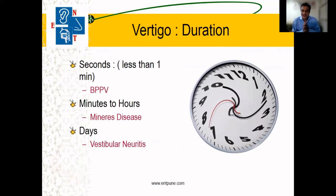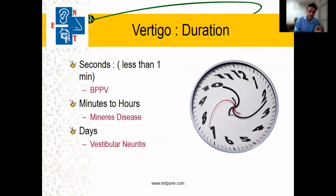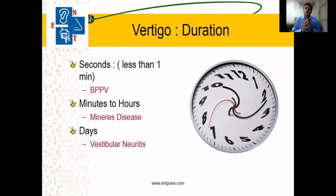The most important thing is duration. If the patient says the duration is sudden and for a few seconds — say 10, 20, 30 seconds — and occurs only while sleeping, getting up, or with some neck movement such as picking something from a shelf or during neck movement, it is typically benign paroxysmal positional vertigo.